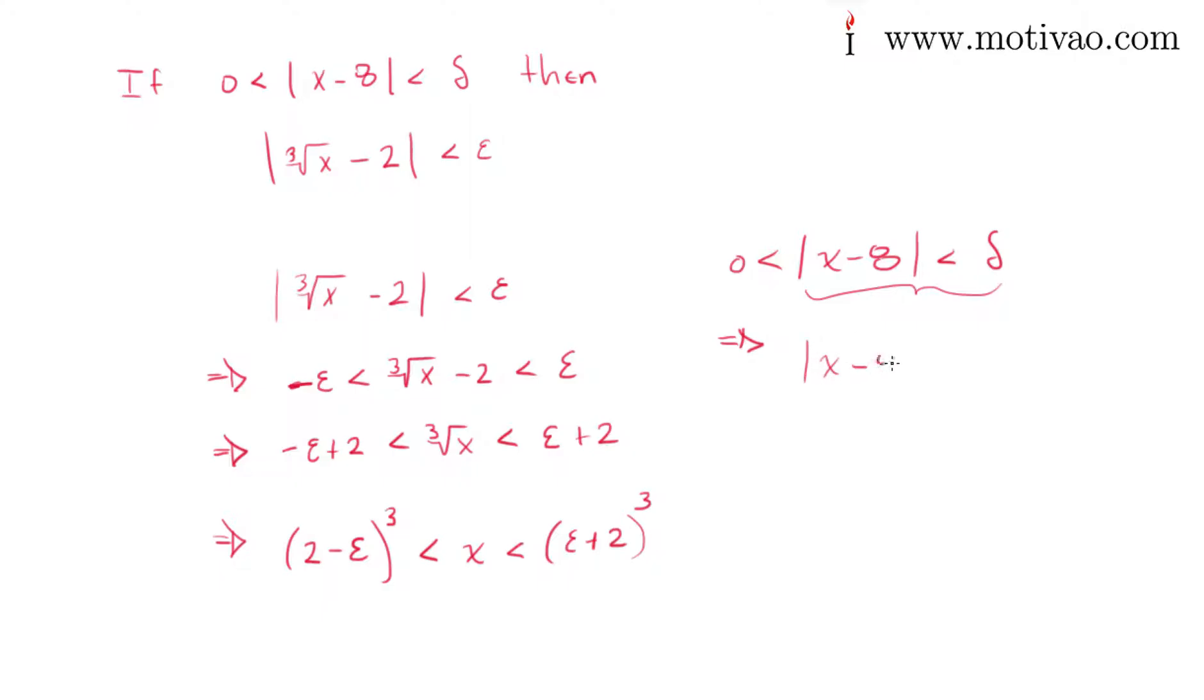So this part is less than delta. Again, just like here, I'm going to break it into minus delta less than x minus 8 less than delta. And then I'm going to add 8 on each side. So this is minus delta plus 8, less than x, less than delta plus 8.